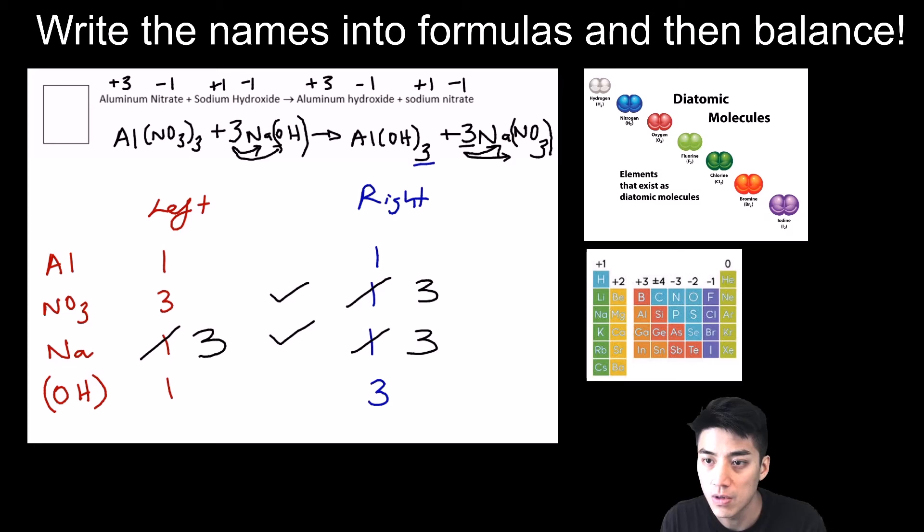There are ones which you don't have to write. But when it comes to the sum of coefficients, you have to include the ones so that you add up these numbers correctly. We've got 1 plus 3 plus 1 plus 3, giving us a sum of 8.